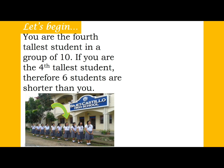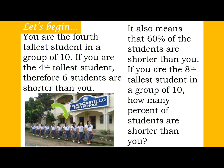Here's a preliminary situation: you are the fourth tallest student in a group of ten. If you are the fourth tallest student, therefore six students are shorter than you — that means 60% of the students are shorter than you. Now, if you are the eighth tallest student in a group of ten, 20% of the students are shorter than you. This is one application of why we need to study measures of position.